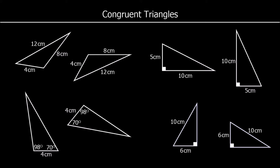These first two triangles here are congruent — they're the same because they've got three sides the same: a four centimeter, an eight centimeter, and a twelve centimeter side. So if all three sides are the same, they must be congruent, and we call that Side Side Side, or SSS.